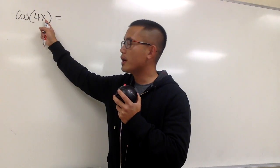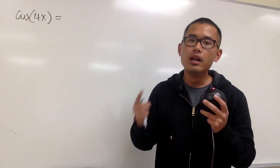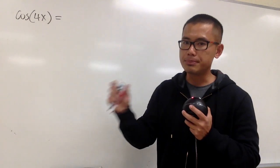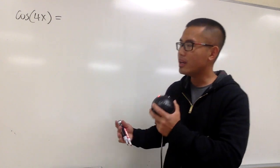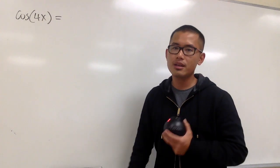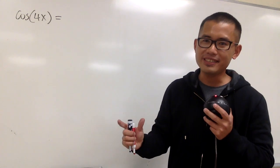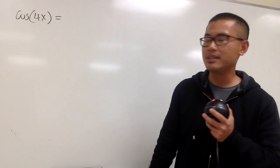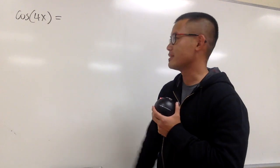We are going to write cosine of 4x in terms of cosine x, and to do this we have two ways. The first way is we can go ahead and break down 4x as 3x plus x, or maybe 2x plus 2x, and use the angle sum formula for cosine. But another way is we can look at 4x as 2 times 2x, so that we can use the double angle identity for cosine — and it will be slightly quicker the second way.